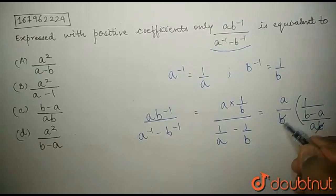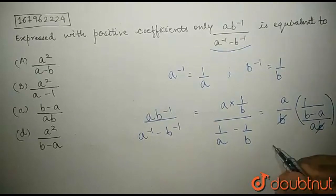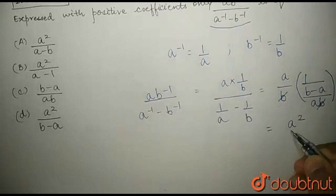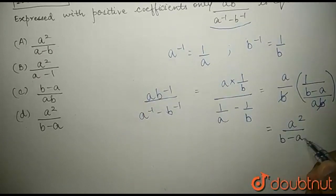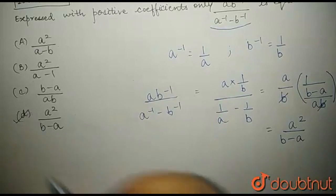So, we get that B gets cancelled and the final answer is A square upon B minus A, which is given in the D part.